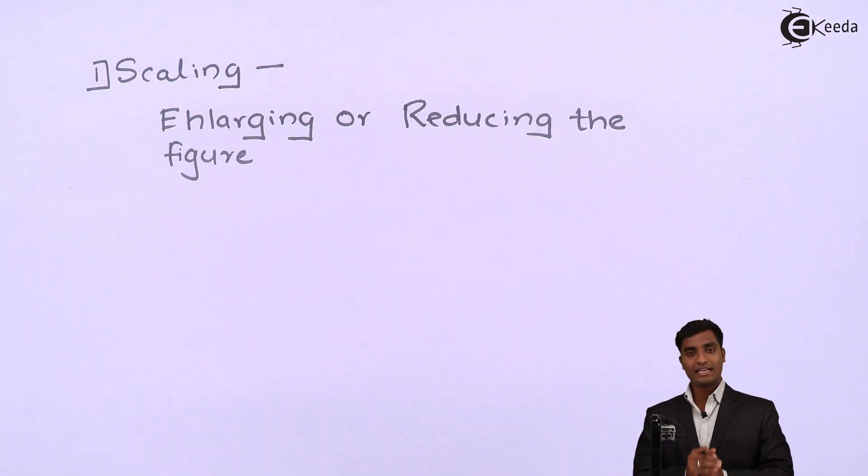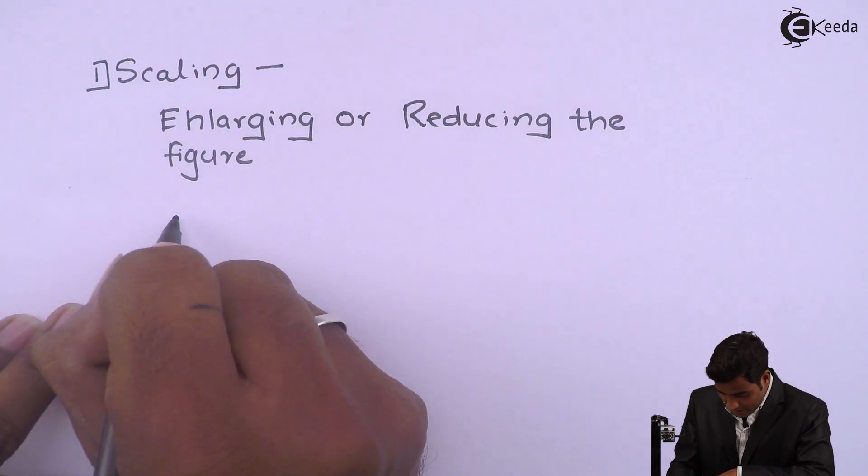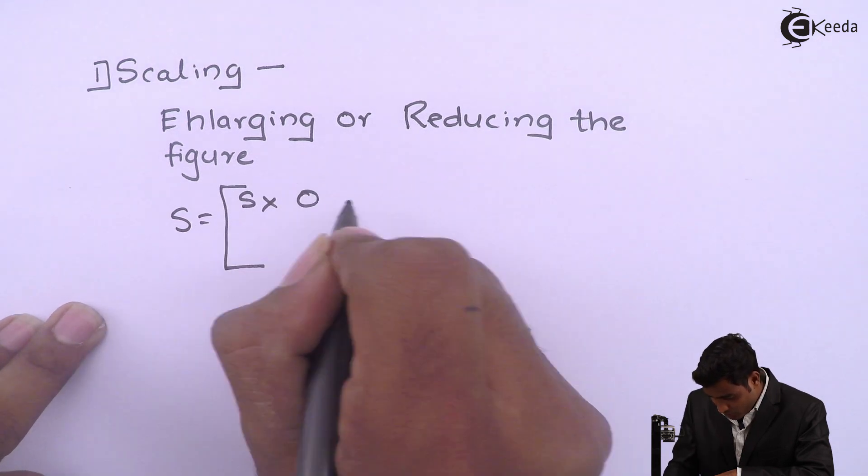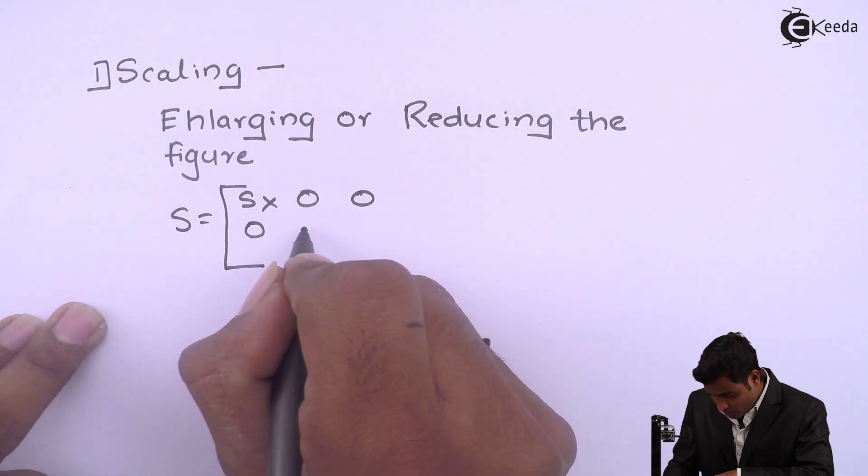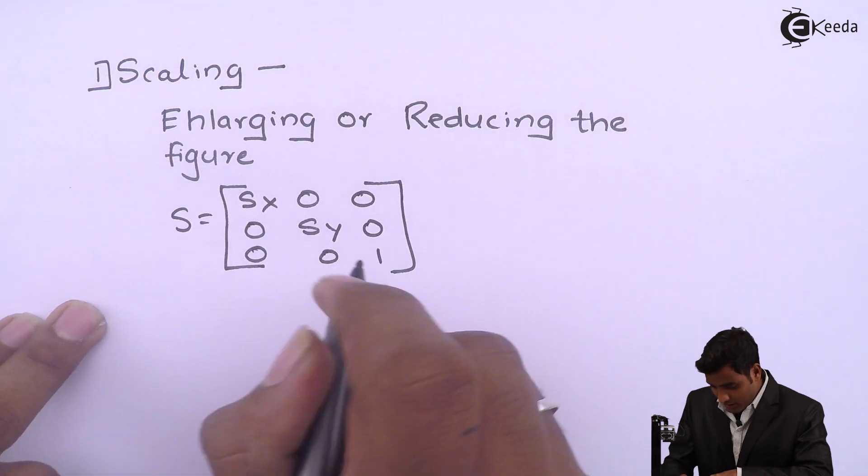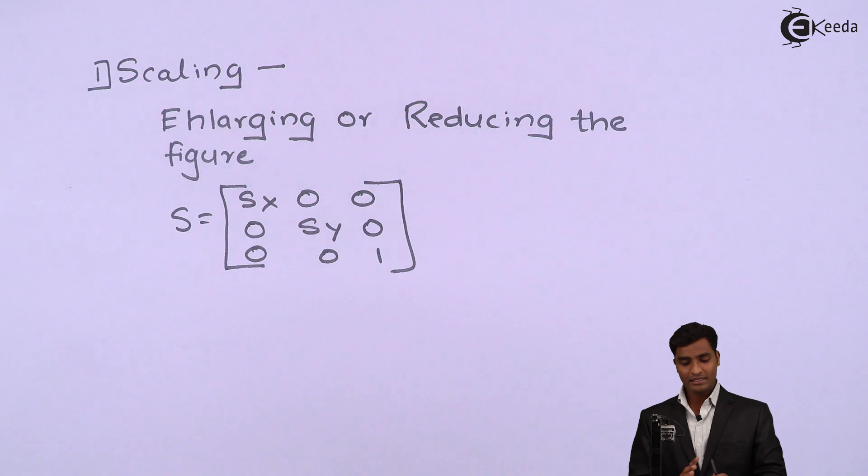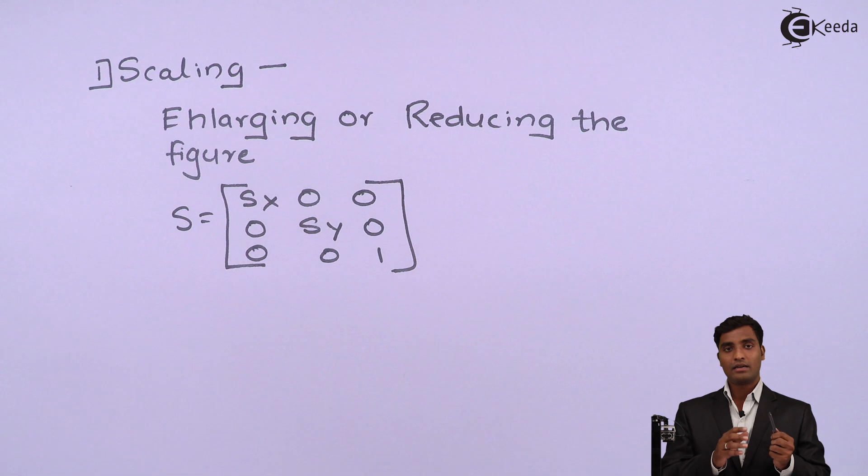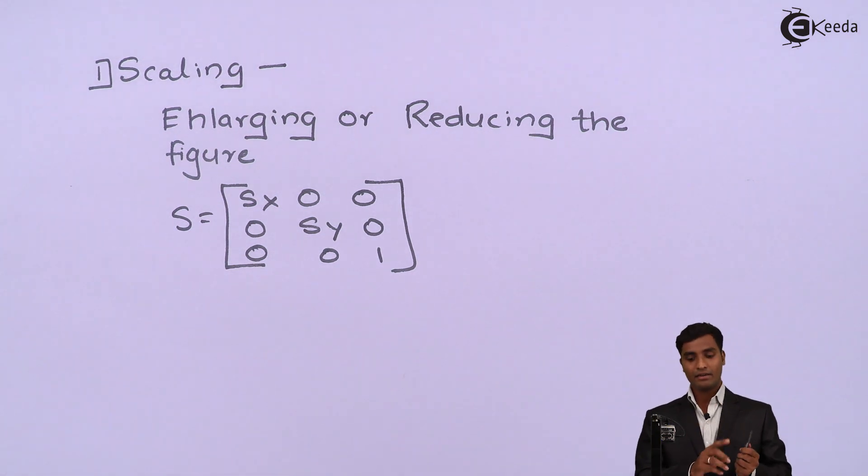And standard scaling matrix is given as S equal to Sx 0 0, 0 Sy 0, 0 0 1. This is standard scaling matrix means for keeping in mind we all know what is identity matrix just replacing one by Sx.